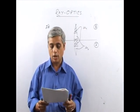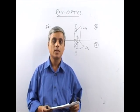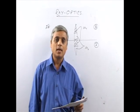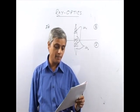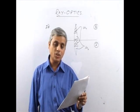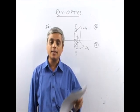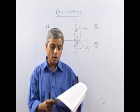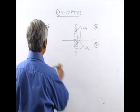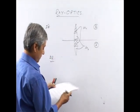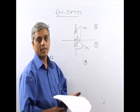Question number 29: A converging lens is used to form an image on a screen. When the upper half of the lens is covered by an opaque screen, half the light passes through. Therefore: A (half image disappears) — wrong; B (complete image, unchanged intensity) — wrong; C (complete image, increased intensity) — wrong. D (complete image with decreased intensity, roughly half) — correct. The answer is D.